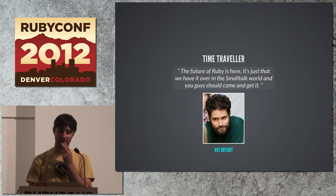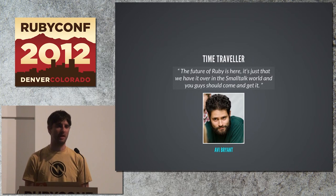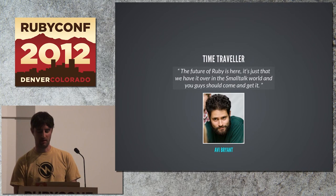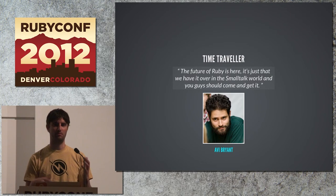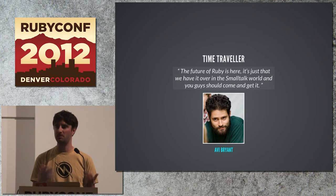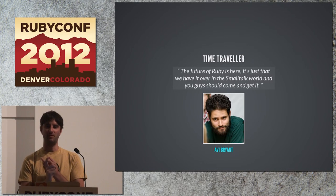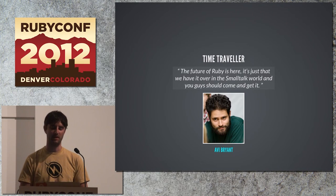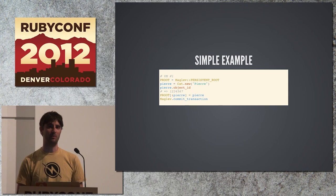Getting back to Avi — back in 2007 he gave the keynote at RailsConf, talking about Gemstone a bit, and he said: 'The future of Ruby is here, it's just that we have it over in the Smalltalk world, and you guys should come and get it.' He was mainly talking about having a fast VM and having a nice persistence model that you essentially don't really have to think about. And so we have that with Maglev.